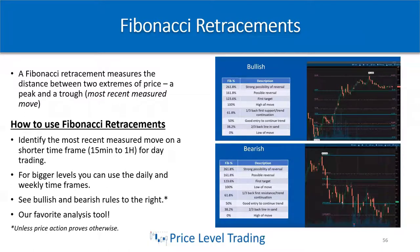I always have the asterisk that price action proves otherwise and we don't follow these rules. For bullish setups, I typically plot from 0 to 100% — that's the measured move — with extensions above and below the high and low. One-third back is typically the 61.8% Fibonacci, which is the first support and trend continuation if we're in a strong trend — a good entry point. The 50% is also a good entry to continue trend.